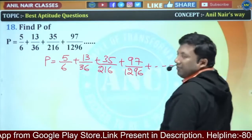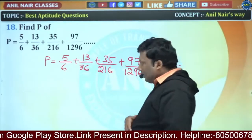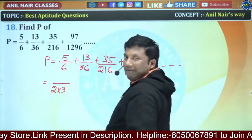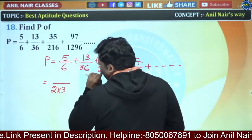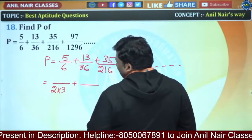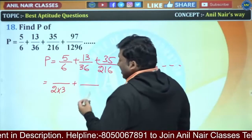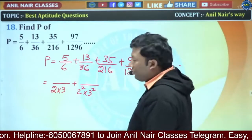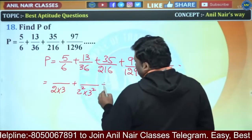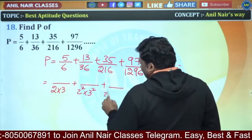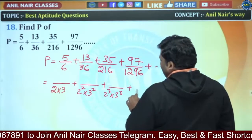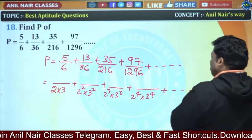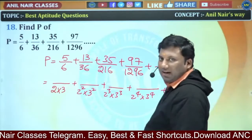6 can be written as 2×3. 36 is 6 squared, which is 2²×3². 216 is 6 cubed, which is 2³×3³. So we see the pattern for the denominators: 2^n × 3^n, continuing up to infinite terms.